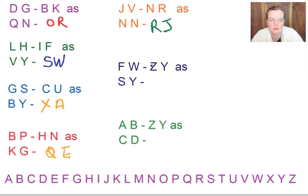F to Z, F to Z. Which way are we going to go? Let's go back 1, 2, 3, 4, 5, 6. So we go S back 6, 1, 2, 3, 4, 5, 6, M.